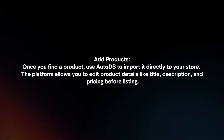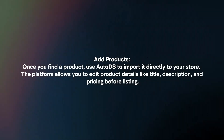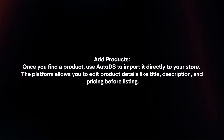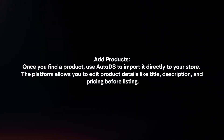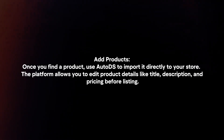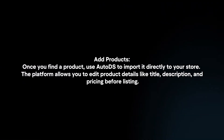Add products: once you find a product, use AutoDS to import it directly to your store. The platform allows you to edit product details like title, description, and pricing before listing.